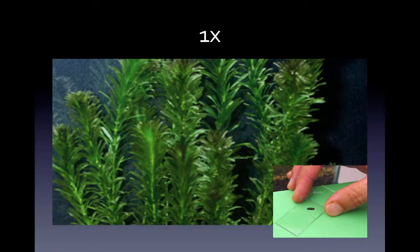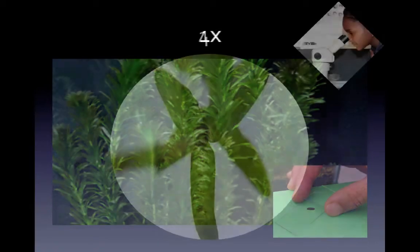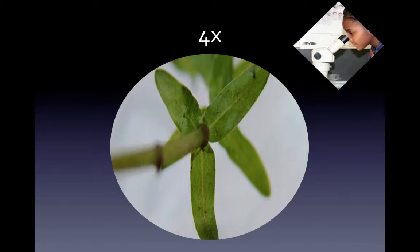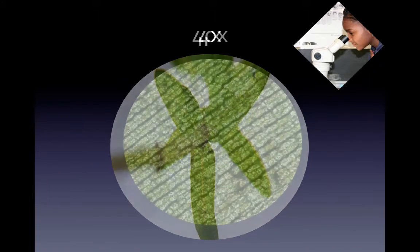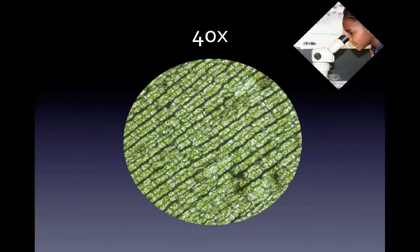What happens if we take a small leaf and examine it under magnification? At four times magnification, maybe just with a hand lens or a dissecting microscope, we can already see a little better structure in the leaf — we can see the veins and how they connect to the stem. But when we start to increase magnification, we start to see some detail at a cellular level.